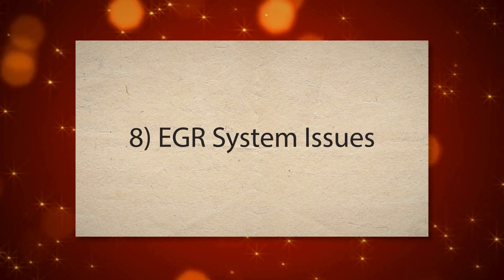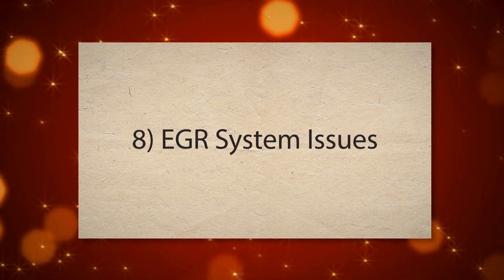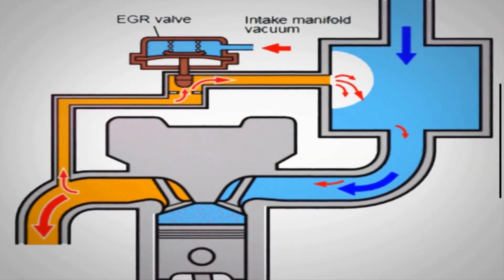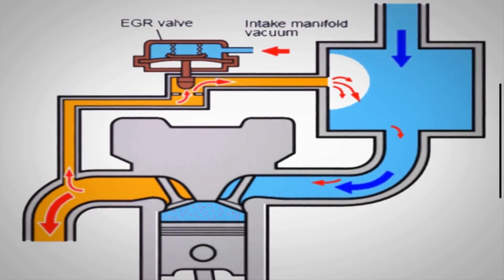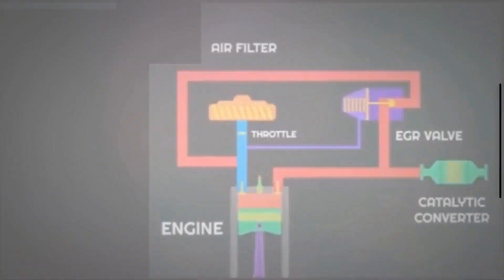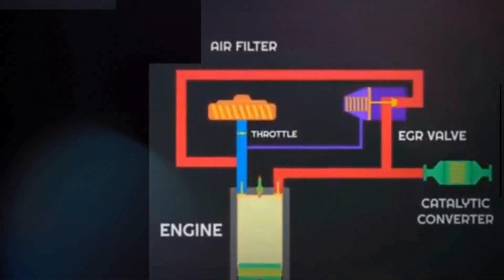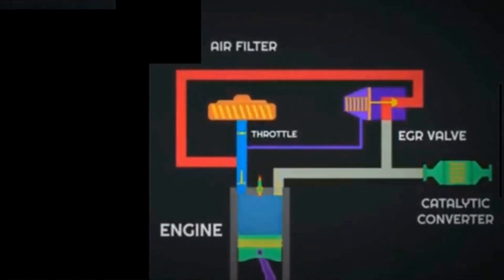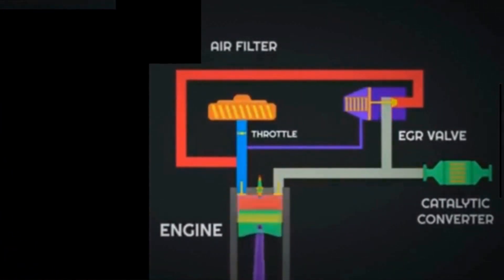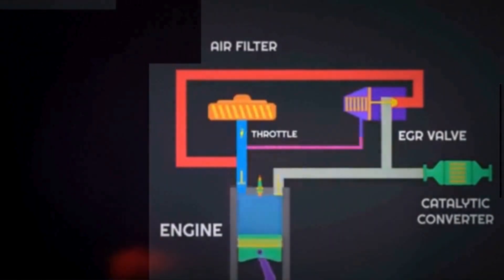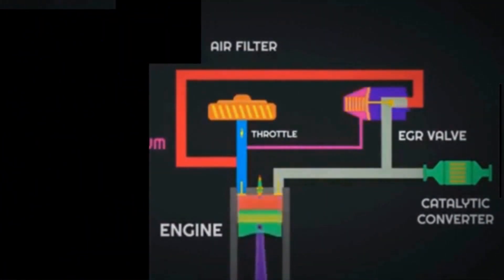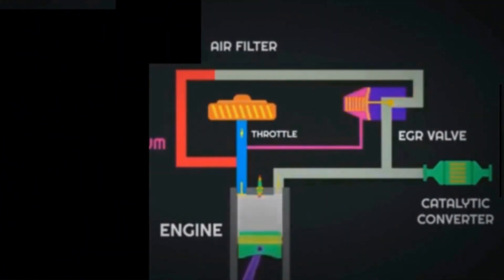The eighth cause is EGR system issues. The exhaust gas recirculation system recirculates a portion of the exhaust gases back into the intake manifold to reduce emissions and improve efficiency. Problems with the EGR system, such as a stuck EGR valve, can affect the air-fuel mixture and combustion process in Cylinder 2, causing a misfire.